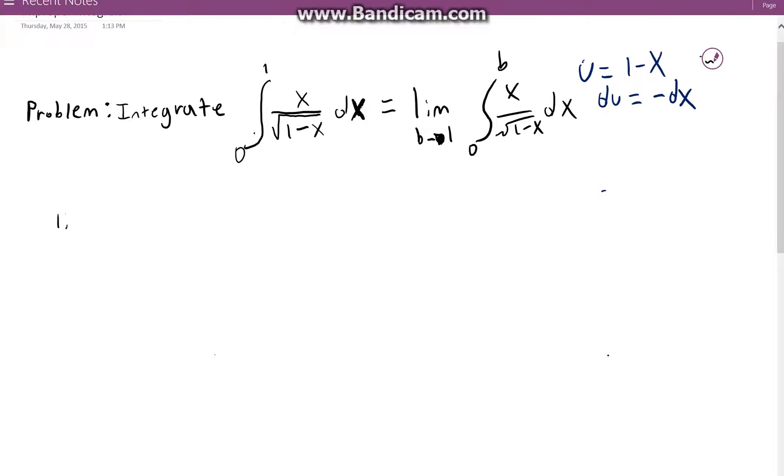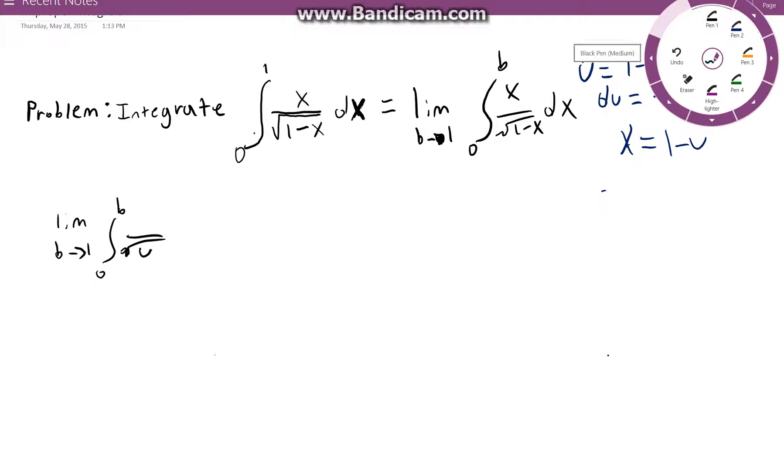The limit as b approaches 1 from 0 to b of, I'm going to do the denominator first, the square root of u. And what should we put in the numerator? Well, we need to replace x. So if we just isolate x here, we can see that x is equal to 1 minus u. So therefore, we can replace x in the numerator by 1 minus u.